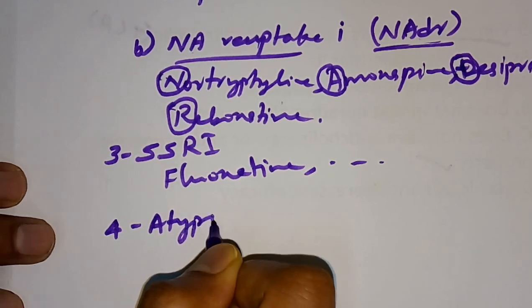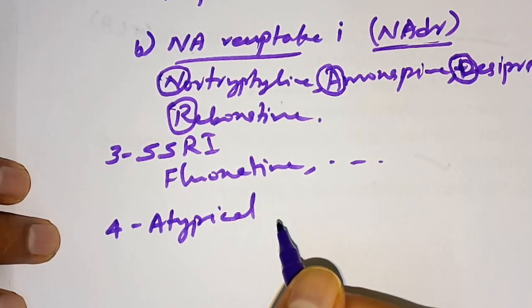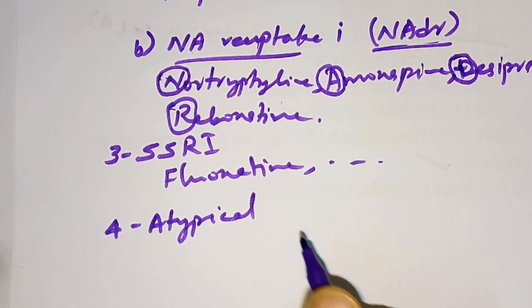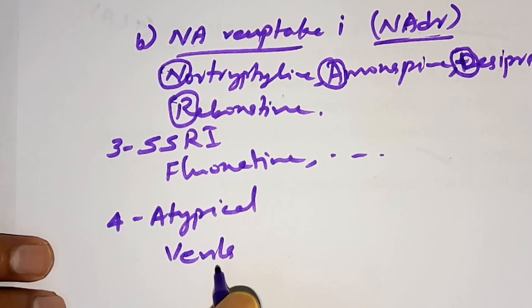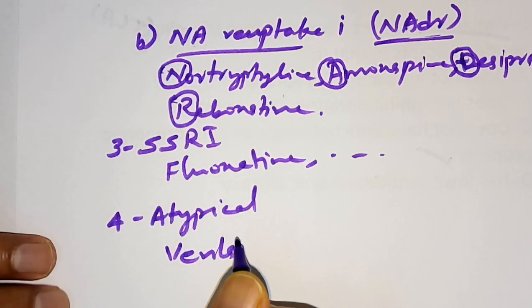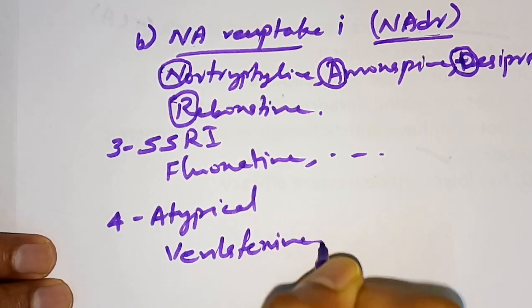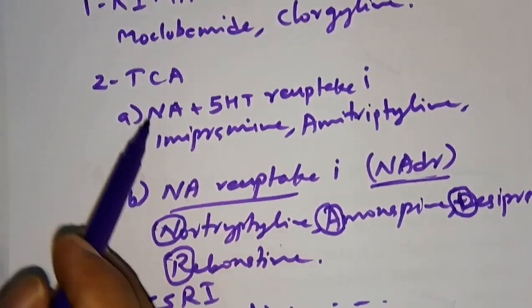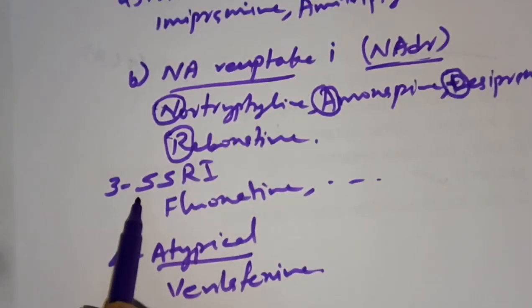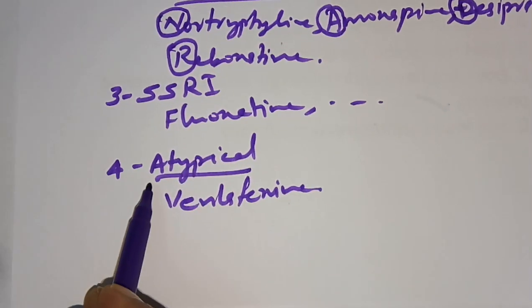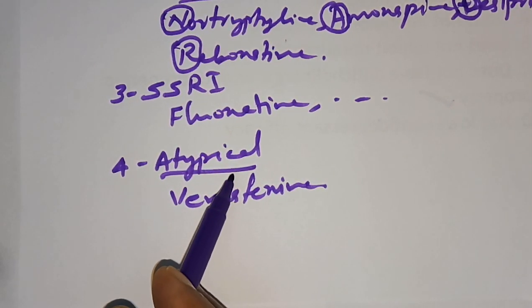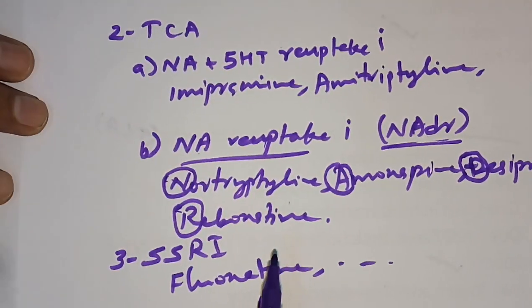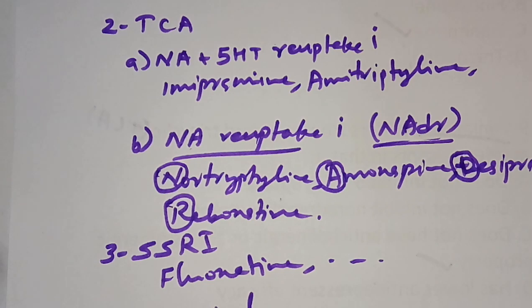The fourth class is atypical antidepressants. Examples include Trazodone, Mianserin, Mirtazapine, Venlafaxine, Tianeptine, Duloxetine, Amineptine, and Bupropion. So antidepressants are classified into four types: reversible inhibitor of MAO-A (RIMA), tricyclic antidepressants (TCA), selective serotonin reuptake inhibitors (SSRI), and atypical antidepressants. This classification is very important — you have to learn it well.